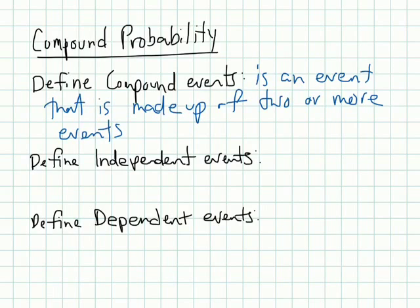Some of that compound event is when you have two or more events, and you're trying to find the probability of either some of these happening, or all of them, the and, the or, things like that.